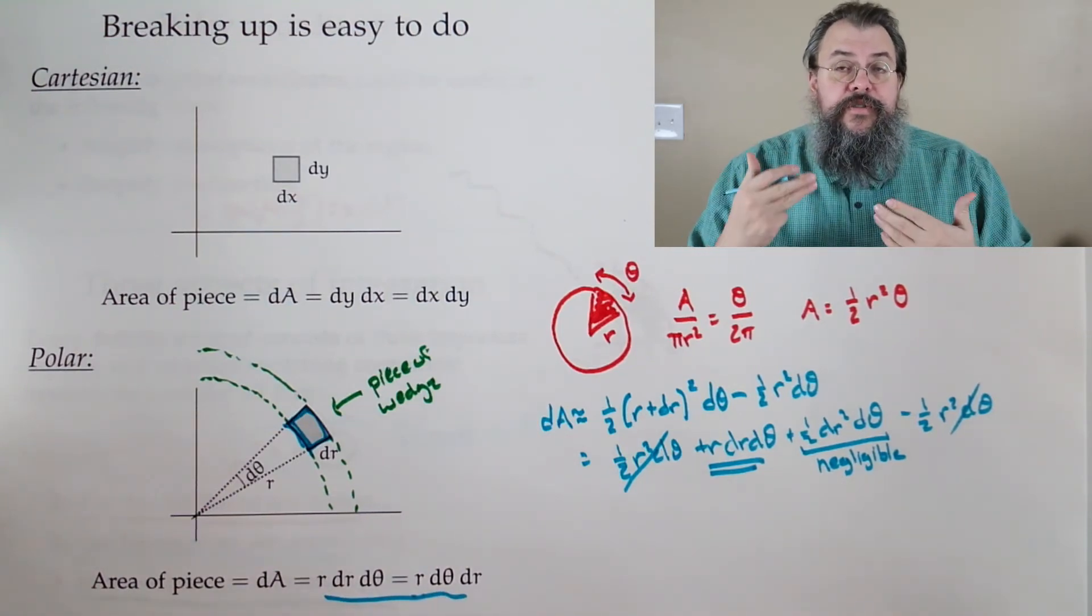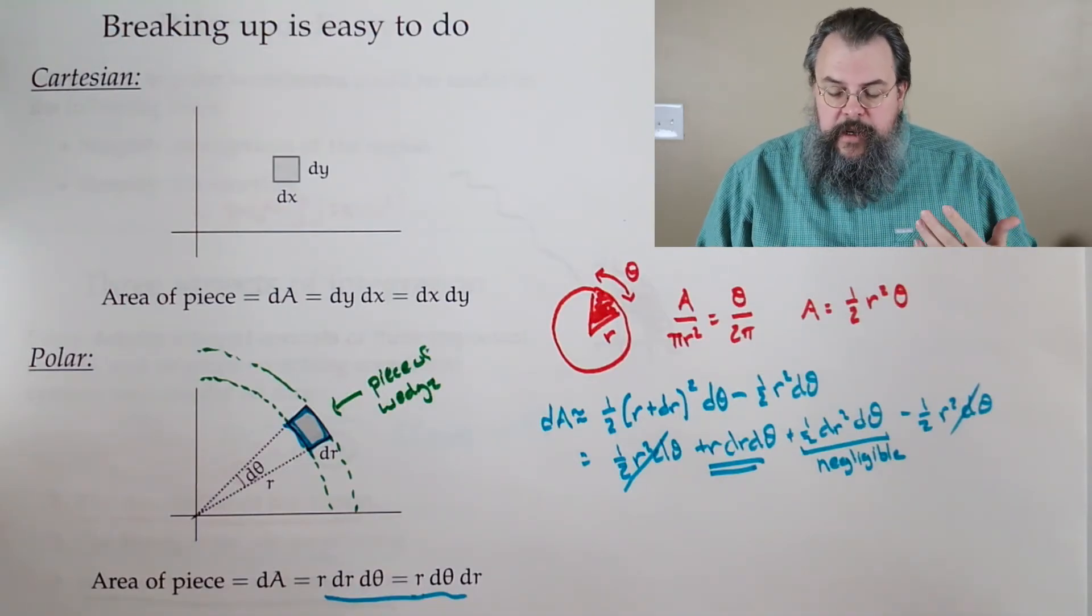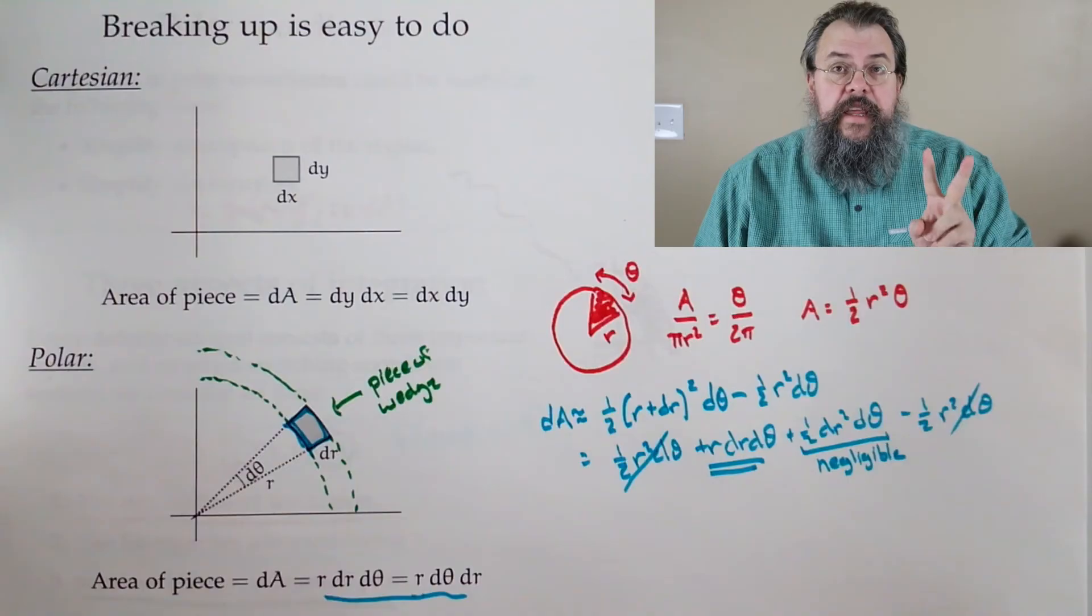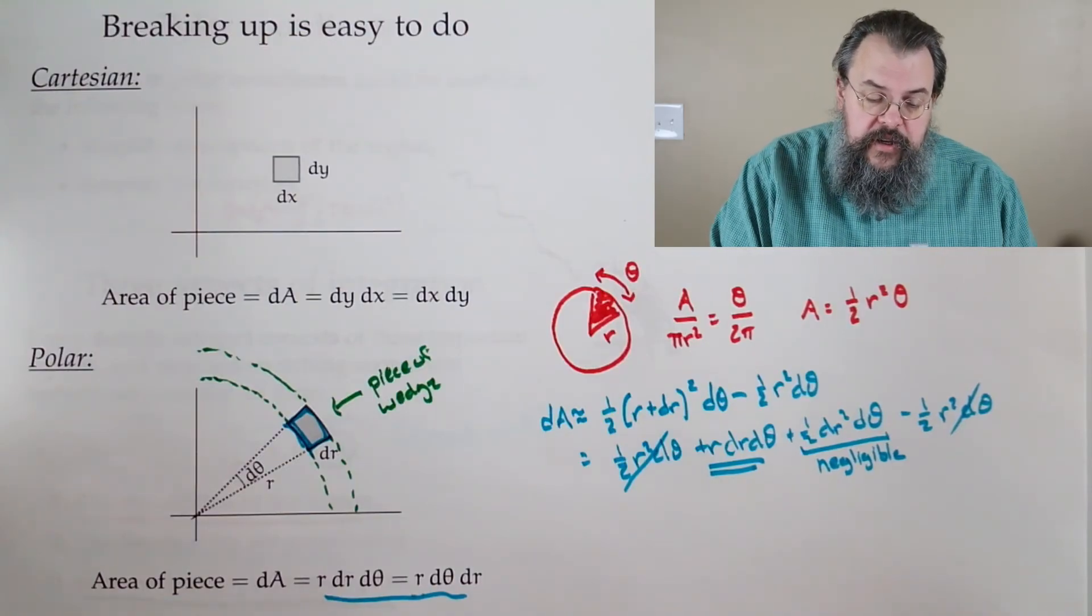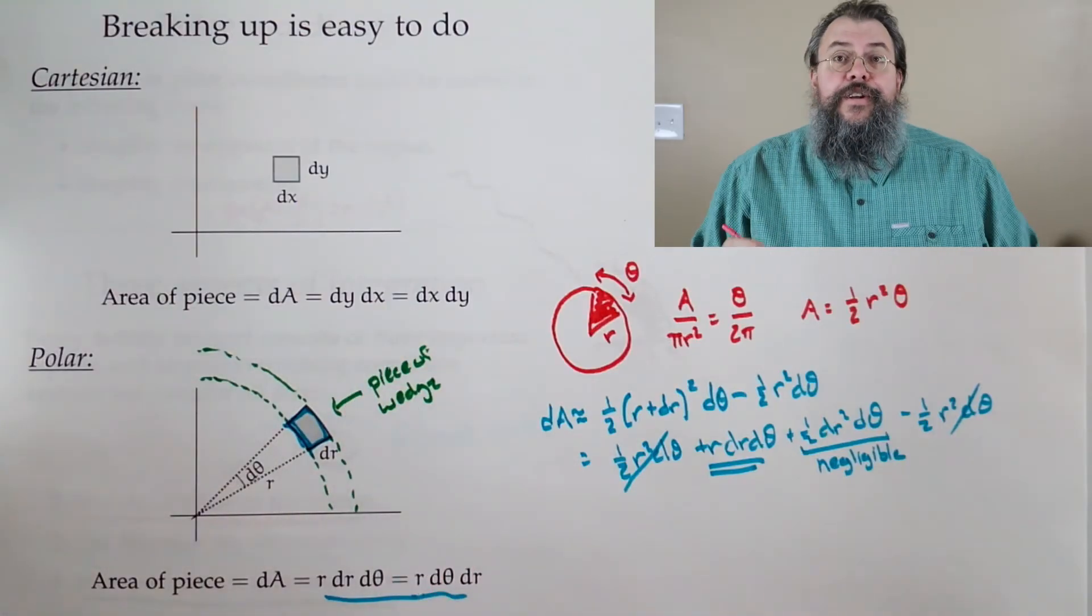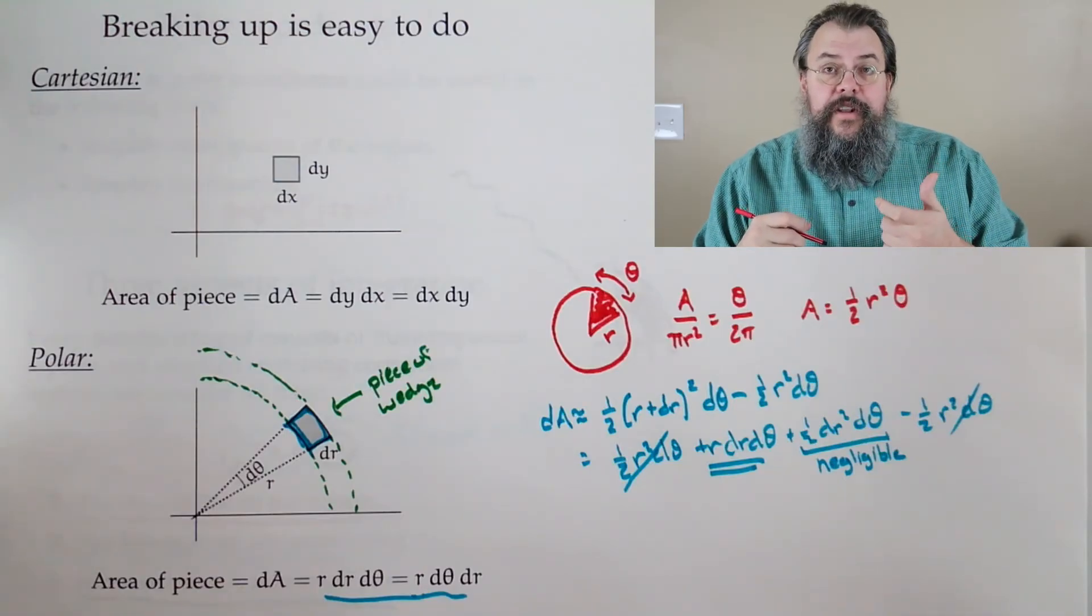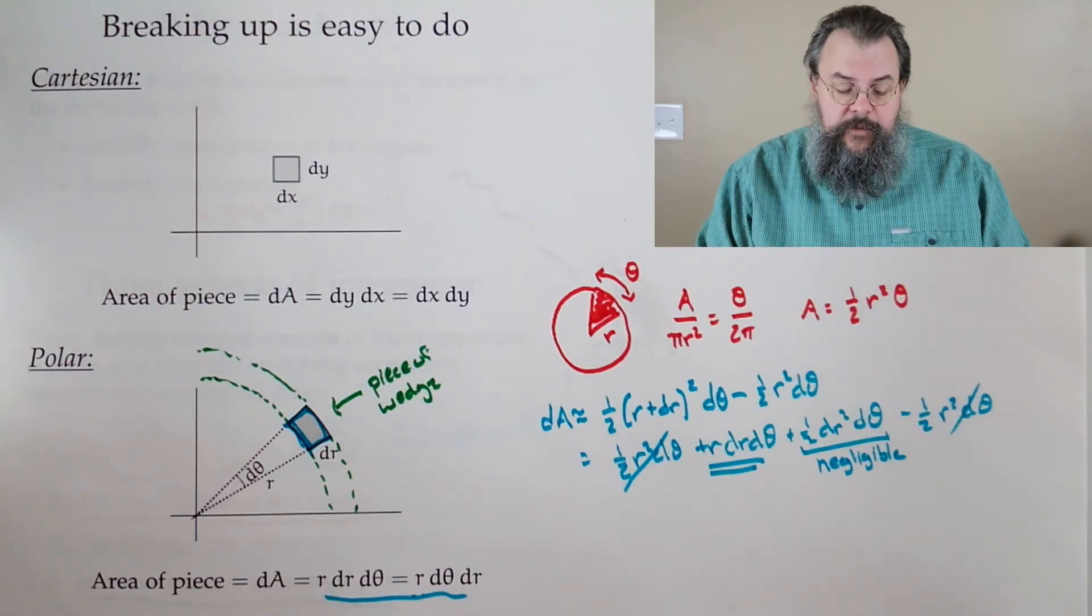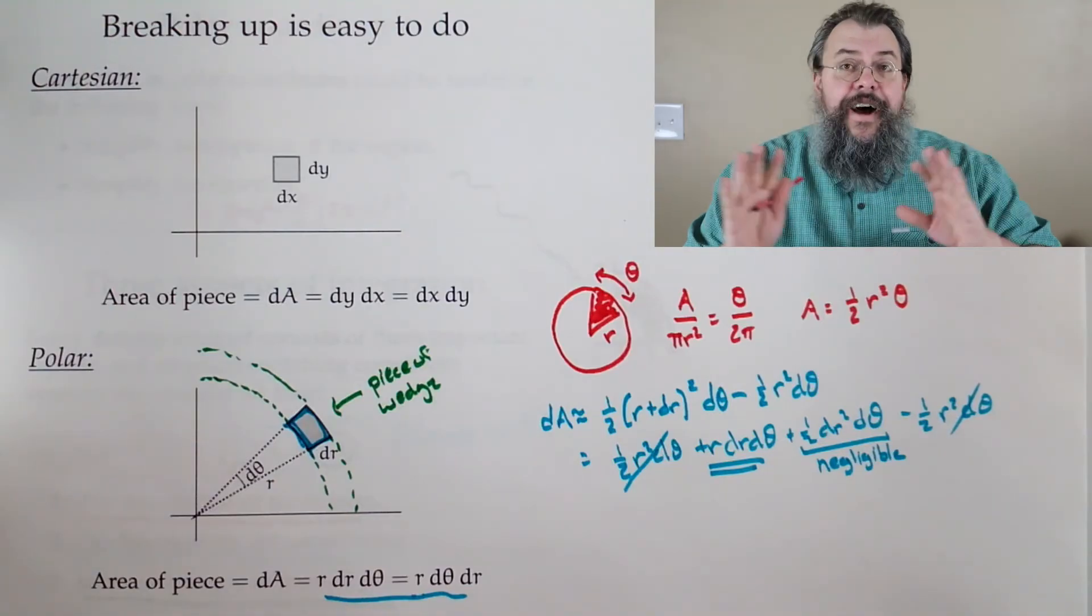And so when we come back here to Cartesian, we say, look, dy dx, there's two lengths involved, right? Because change in y is a length, change in x is a length. Here, r dr d theta. d theta is not a length. When I'm talking about angles, angles are not lengths. And so d theta is not a length.